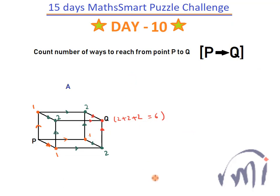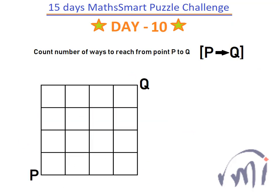Now let's solve the next problem. Here also we have to start from point P and reach point Q. The relative position of point Q with respect to point P is at the top right. We have to follow these paths but keep in mind that we can only walk either towards the right or towards the north.